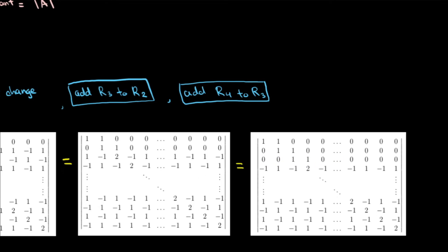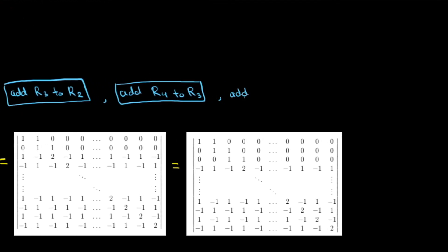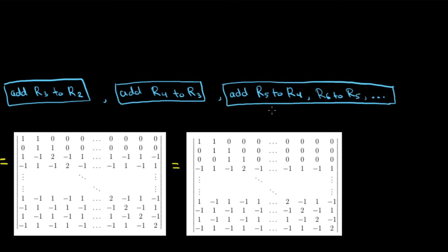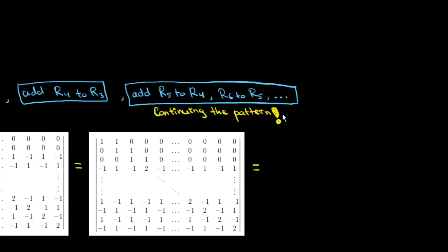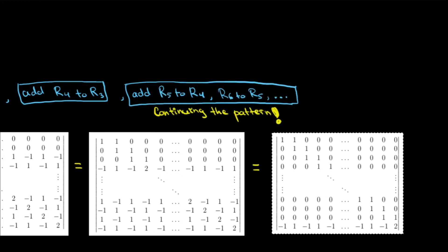We do the same again — we add r4 to r3 to make the third row simpler. The new matrix has the third row with values zero, zero, zero, then 1, 1, and then all zeros again. We continue this pattern: adding r5 to r4, then r6 to r5, and so on in that order. Doing these similar operations many times — adding rows to another row — we will get a much nicer, simpler matrix.